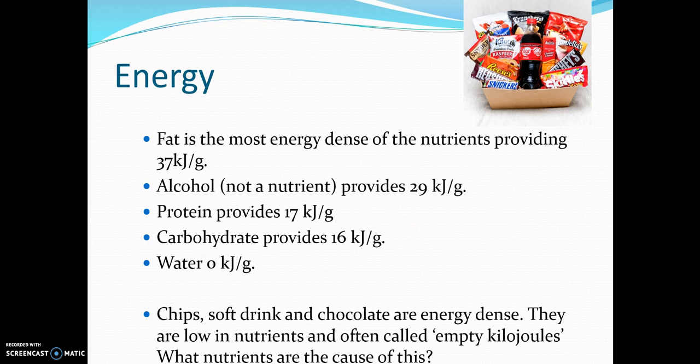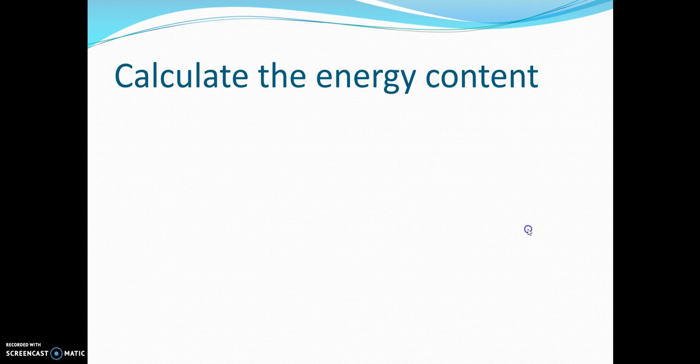The question posed is: what nutrients do you think are the cause of this high energy density in foods like chips and chocolate? The answer is sugars — they contain a lot of sugars in them.